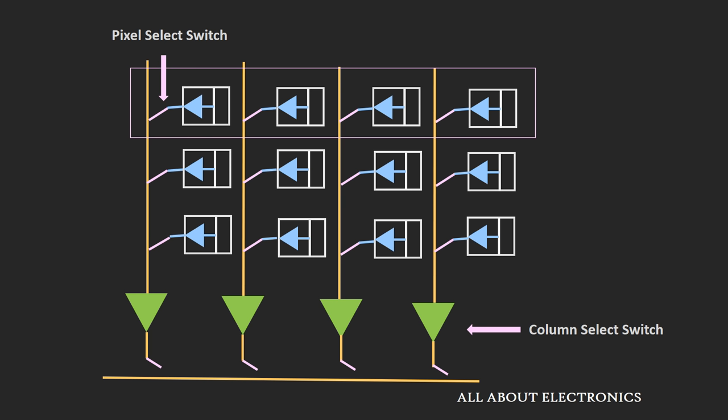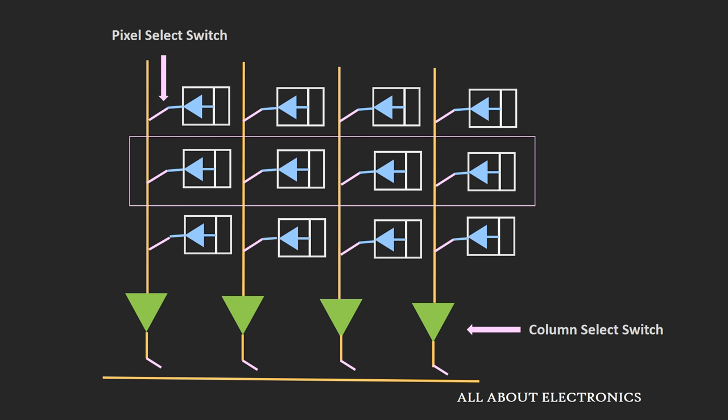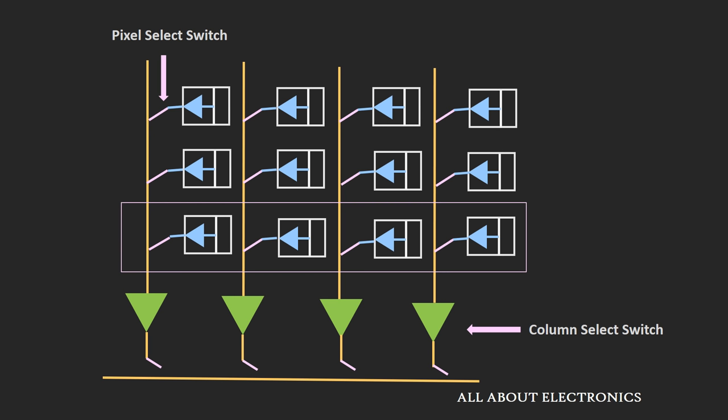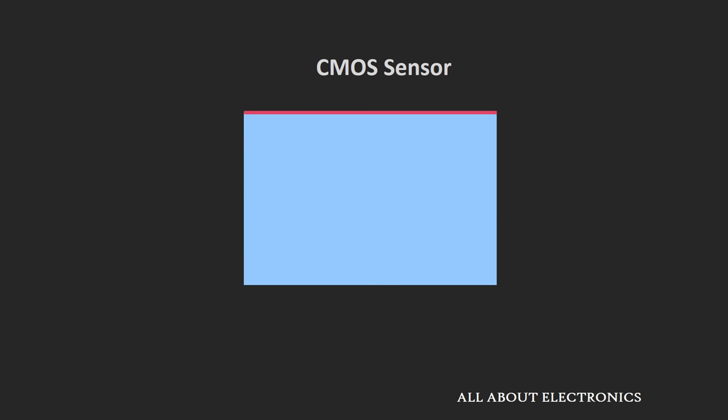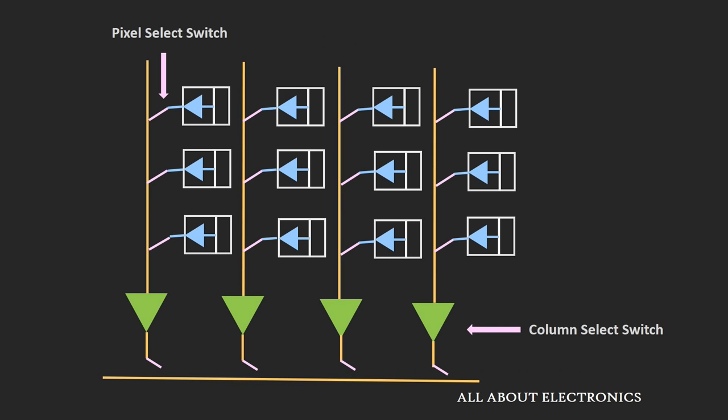This pixel select switch connects the output voltage of the pixel to the column line. By activating the column select switch one by one, we can read the data of each pixel, and the same procedure is repeated for the remaining lines. In this way, in the case of the CMOS sensor, the data is read in a line-by-line fashion. This is the overview of how the CMOS sensor works.